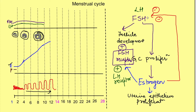Despite the negative feedback reducing FSH levels, FSH can still act on the follicles causing further follicular development and maturation, because FSH and estrogen caused upregulation of FSH receptors earlier. There is appearance of the antral cavity and proliferation of the granulosa cells, which keep releasing estrogen causing a further rise in estrogen levels. So FSH drives follicular development, the follicle releases estrogen, and estrogen in turn affects FSH, LH, and the uterine epithelium.